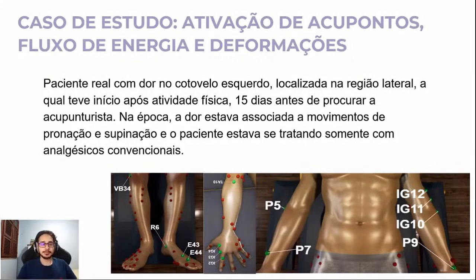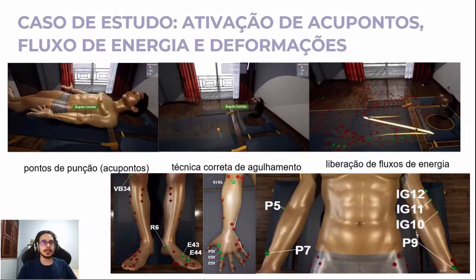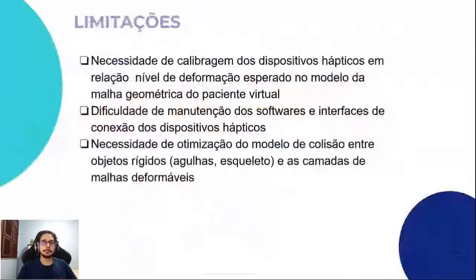Na imagem superior, são mostrados os pontos já efetivados em seus ângulos corretos e os efeitos visuais na liberação de energia. No caso do paciente com dor no membro, o fluxo de energia liberado pelo agulhamento tem início no braço comprometido, terminando na coluna vertebral do paciente virtual. Dentre as limitações: necessidade de calibragem dos dispositivos hápticos em relação ao nível de deformação esperado, dificuldade de manutenção dos softwares e interface de conexão, e necessidade de otimização do modelo de colisão entre objetos rígidos — agulhas, esqueletos — e a camada de malhas deformadas.